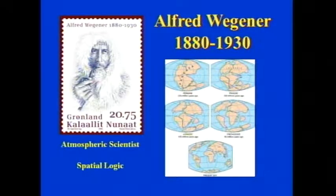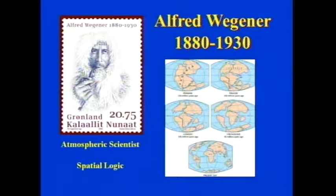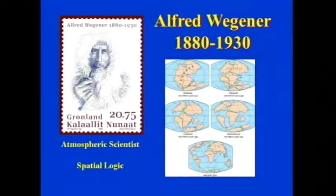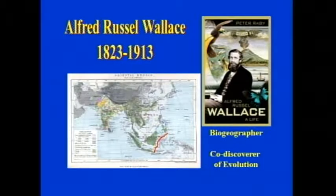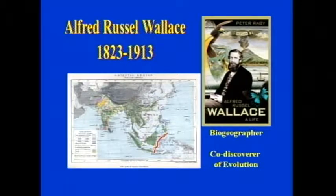Alfred Wegener, recognized today as the author of Continental Drift Theory, was an atmospheric scientist — if he were at my university today, that would be in the geography department. He used spatial logic identical to the way most geographers think. Alfred Russell Wallace, best known for the Wallace Line separating different types of vegetation and fauna of Southeast Asia, was the co-discoverer of evolution — and by today's rules of precedence would be considered the discoverer.